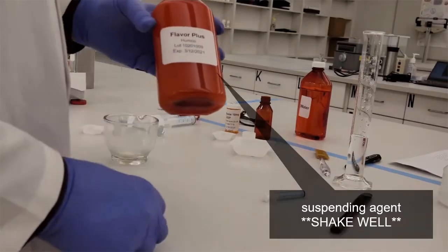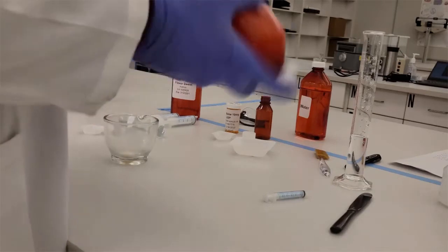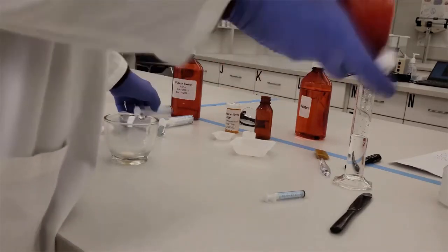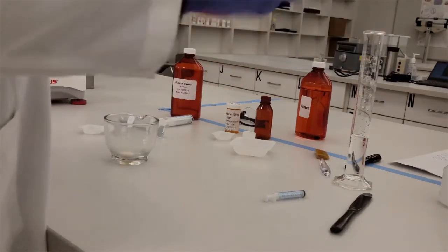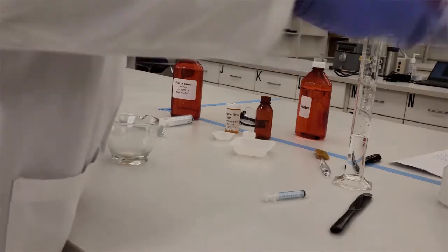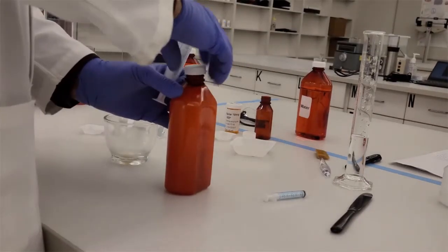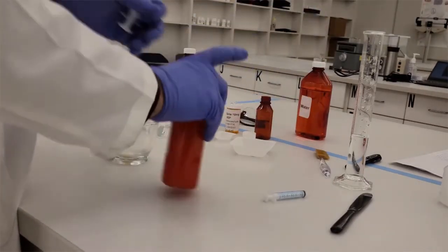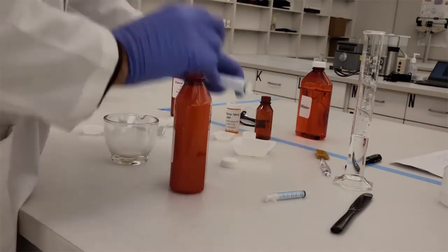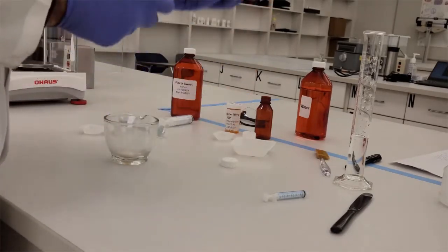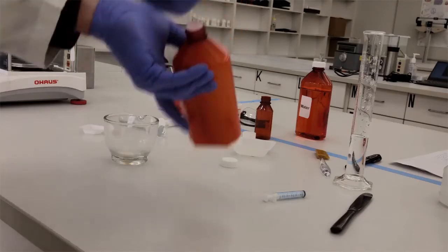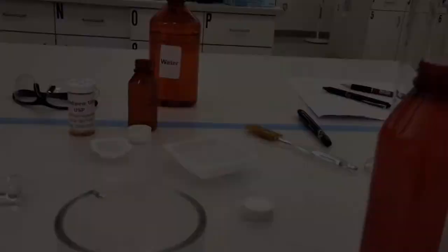So the first thing we're going to do is we're going to look for our suspending agent that you have in the lab. You're going to shake well because it's a thixotropic vehicle. So we're going to shake it well and you might as well shake it one more time for extra luck. And then we're going to use either an oral syringe or a graduated cylinder to measure out half of the volume you need. So I'm measuring mine 17.5 mLs.